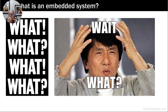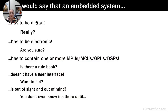This is a tricky question. I've been to quite a few embedded systems conferences and talked about this subject with many engineers, and the one thing that is common is that no one can agree on what an embedded system is. Some people say it has to be digital, electronic, contain one or more processors, have no user interface, and be out of sight and out of mind. About 20 years ago, the best definition I heard was: an embedded system is one you don't even know is there until it stops working.